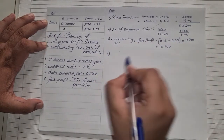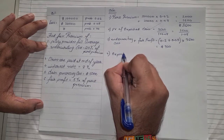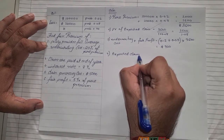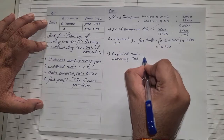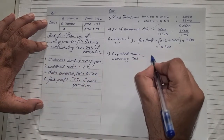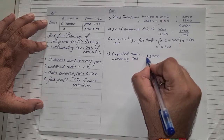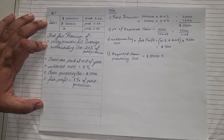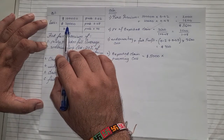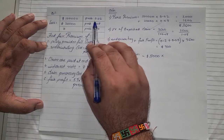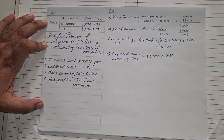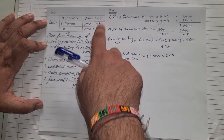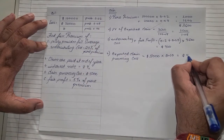Step four: find expected claim processing cost. The formula is claim processing cost multiplied by the total probability. The cost is $5,000. For full coverage, we take all the loss probabilities together: 0.02 plus 0.08 equals 0.10. So expected claim processing cost is $5,000 into 0.10, which comes to $500.